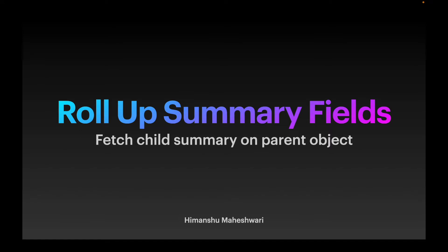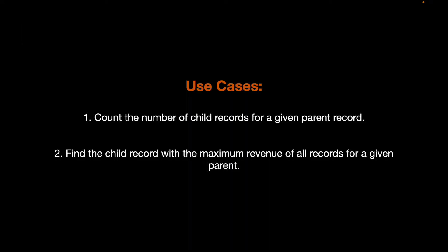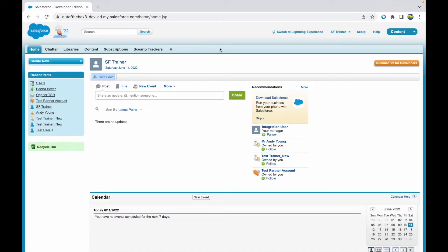Let's take a look at two use cases we'll be discussing. The first one is we need to count the number of child records for a given parent record — say we have a standard object and we want to count all the child records it has. The second use case is to find the child record with the maximum revenue of all records for a given parent. So we assume there's a child object which has a revenue field, and we need to find which child record has the maximum revenue and put that on the parent level.